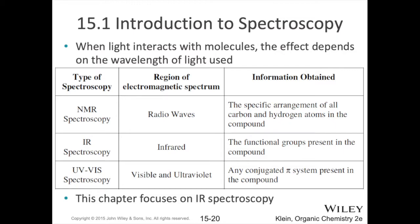When it comes to spectroscopy, we're going to take different parts of this spectrum and shine that kind of light on our sample and see what happens. In the next chapter, we'll look at NMR spectroscopy, where we take radio waves and fire radio wave pulses at our sample — there's also a magnetic field involved, hence the M in nuclear magnetic resonance. In this chapter, we look at IR spectroscopy, using the infrared part of the spectrum. In two chapters, we'll look at UV-vis spectroscopy, where UV stands for ultraviolet and vis for the visible spectrum.